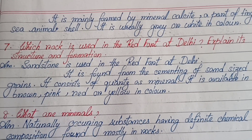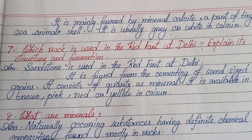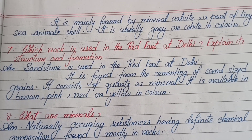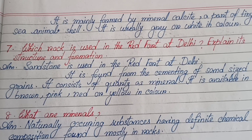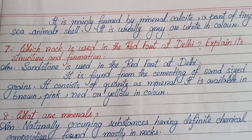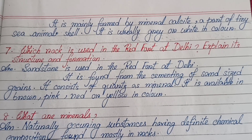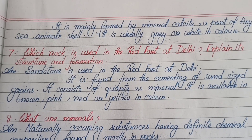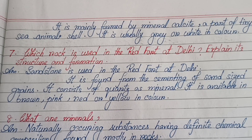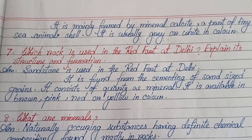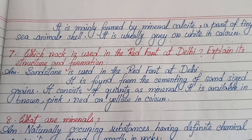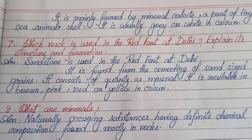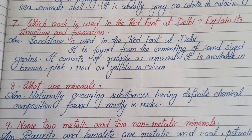Number seven: Which rock is used in the Red Fort at Delhi? Explain its structure and formation. Sandstone is used in the Red Fort at Delhi. It is formed from the cementing of sand-sized grains. It consists of quartz as mineral. It is available in brown, pink, red or yellow in color.